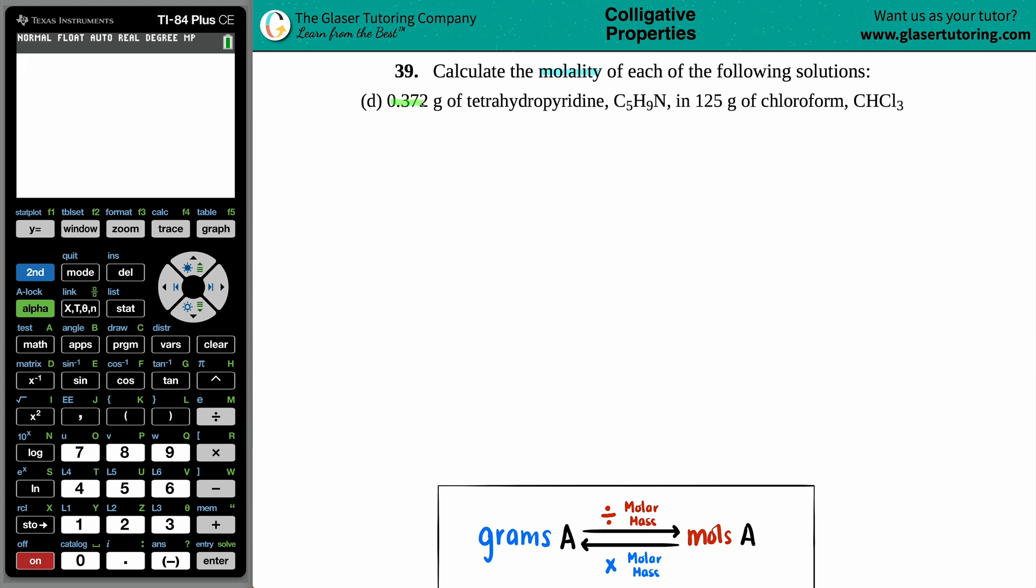So in this case, we have 0.372 grams of tetrahydropyridine, which is C5H9N. And this is in 125 grams of chloroform, which is CHCl3.